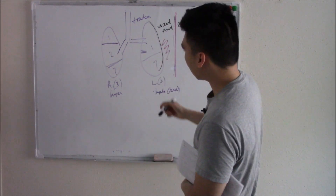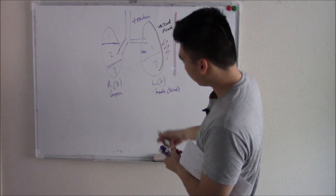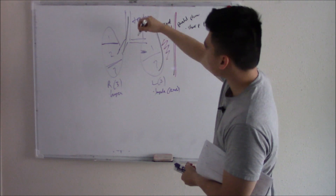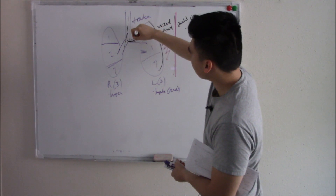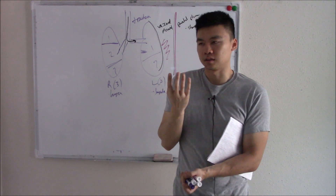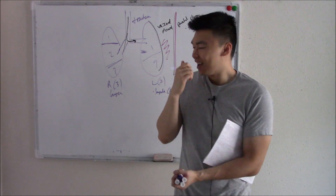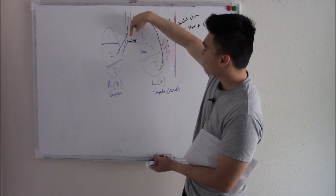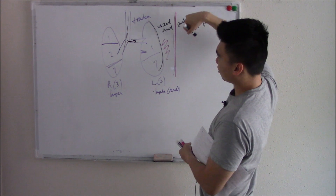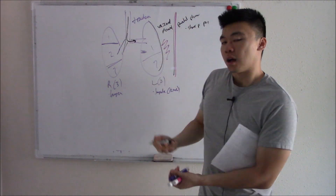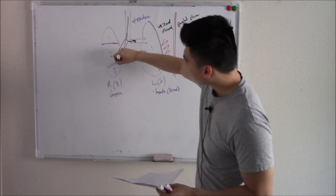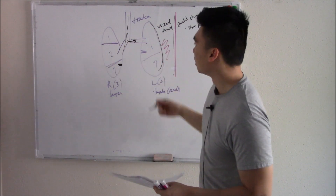Your trachea bifurcates, and when it goes to your right lung, it's a little more vertical. When it goes to your left lung, it's more of a 90-degree angle. This is important because sometimes you can aspirate something — like a peanut. That peanut goes into your windpipe, and rather than taking a 90-degree turn, it drops straight in. So a lot of times when you aspirate something, it goes into your right lung, usually all the way down to your right lower lobe.